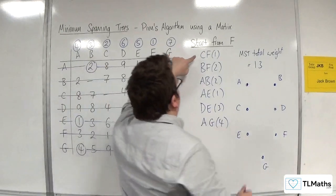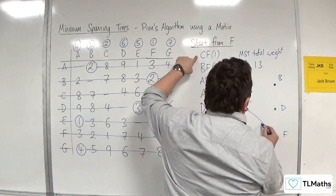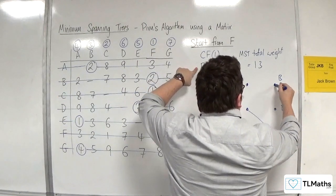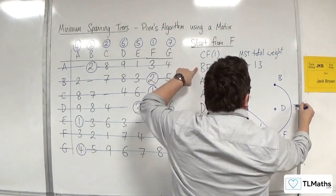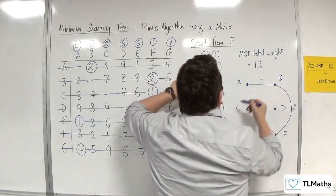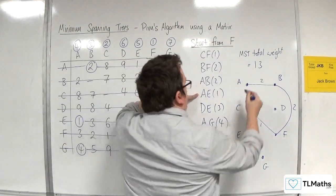We connected C to F, 1. B to F, and that's 2. A to B, 2. A to E, 1.